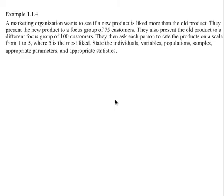An individual is who you measure. It could be a person or it could be an object. The variable is what you measure from them. It could be something like an opinion, or something you actually measure like height.